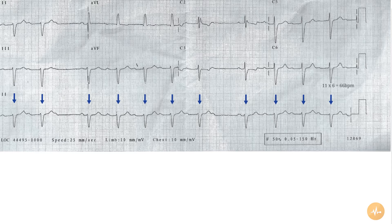This is second degree heart block of the Mobitz Type I, or Wenckebach phenomenon. The first conducted P wave has a PR interval of 200 milliseconds, or five small squares. With each conducted beat, the PR interval elongates.